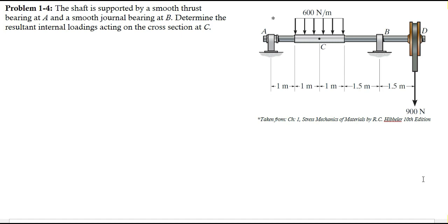For determination of the internal loadings we have to cut the member at the required point and take either portion. In this problem, if I take the right portion of the shaft, I must be familiar with all the forces acting on it. At point B there is a general bearing, and due to the general bearing there would be a reaction at point B. So before proceeding I must find the value of the reaction created by the general bearing.